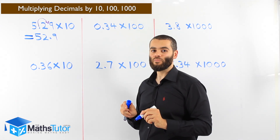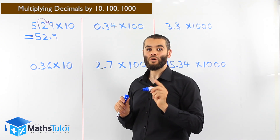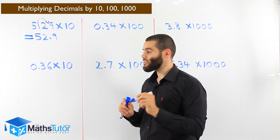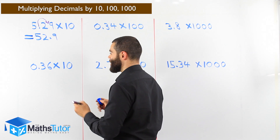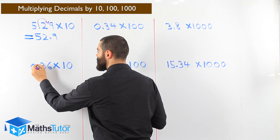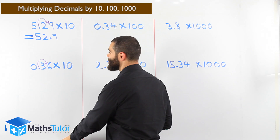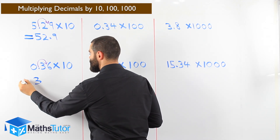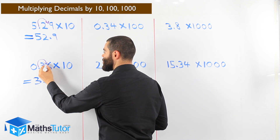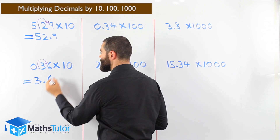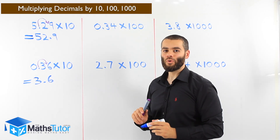Let's see another example: 0.36 times ten. Ten has one zero, so we've got to move once to the right. We grab the decimal point and say, you don't belong over here, you belong over here. All of a sudden we have 3.6. The point moves between the 3 and the 6. 0.36 times ten — one zero, we move it once to the right — gives us 3.6.